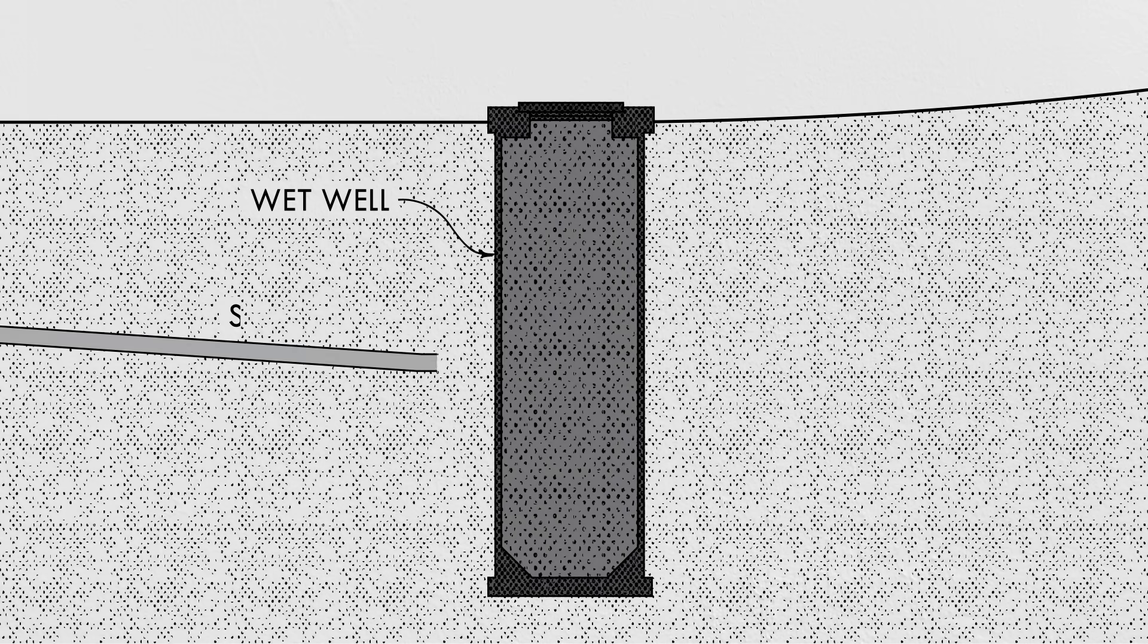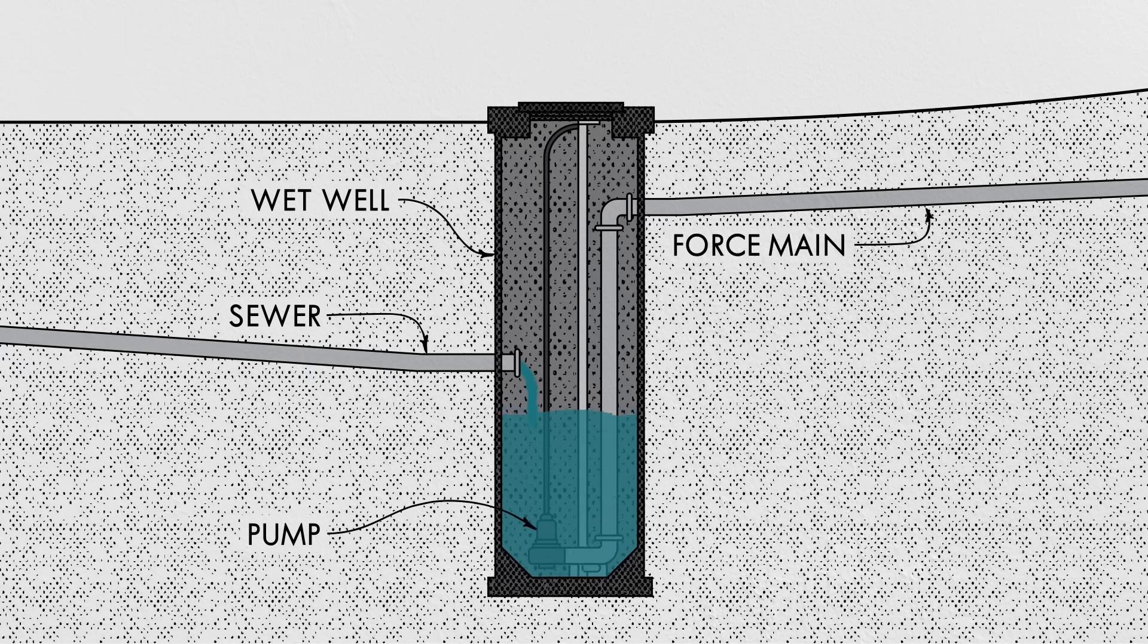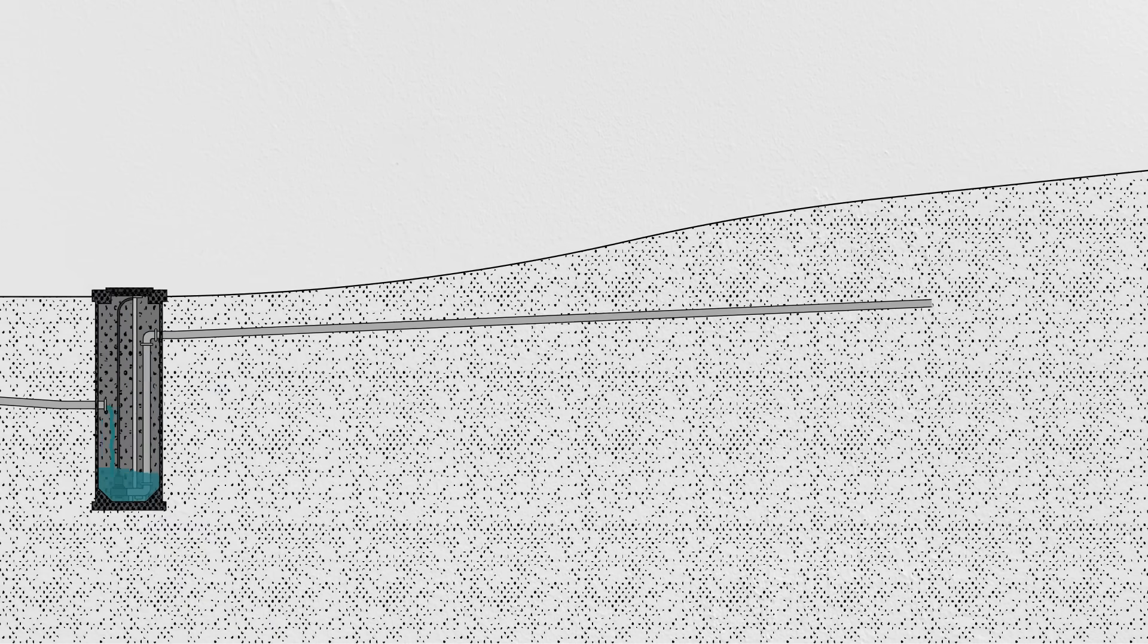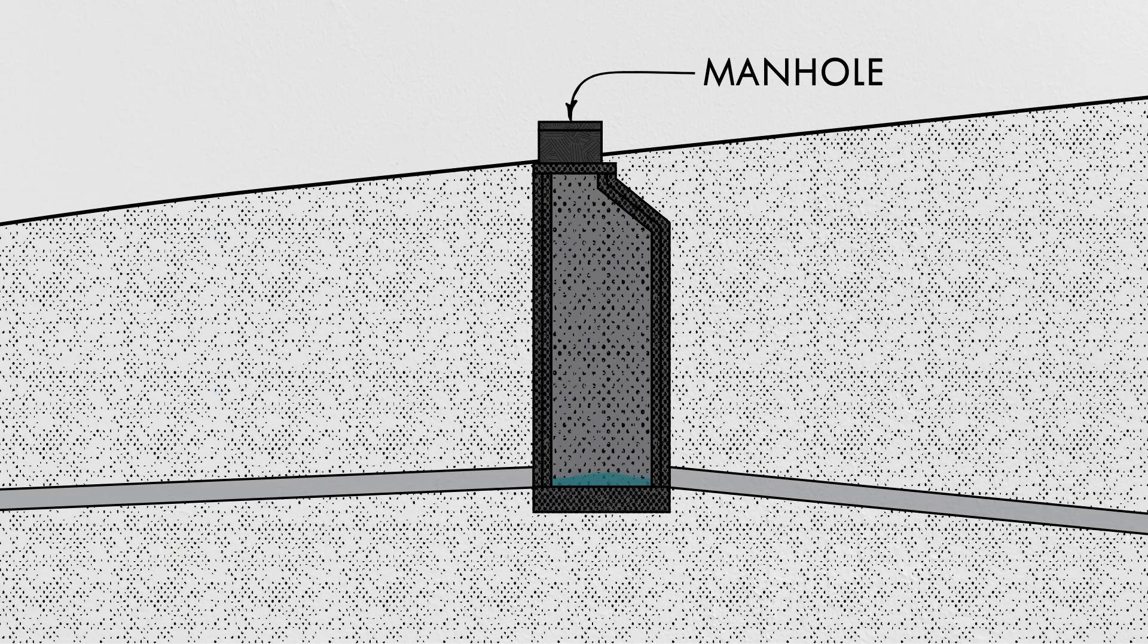A typical lift station consists of a concrete chamber called a wet well. Sewage flows into the wet well by gravity, filling it over time. Once the sewage reaches a prescribed depth, a pump turns on, pushing the wastewater into a specialized sewer pipe called a force main. You always want to keep the liquid moving swiftly in pipes to avoid the solids settling out, so this intermittent operation makes sure that there are no slow trickles during off-peak hours. The sewage travels under pressure within the force main to an uphill manhole, where it can continue its journey downward via gravity once again.